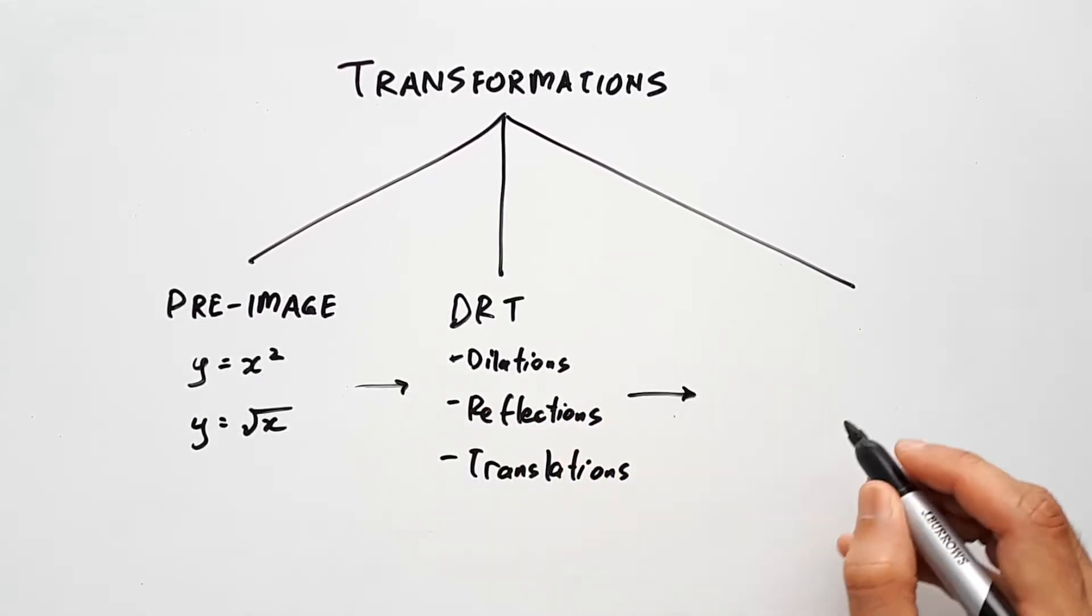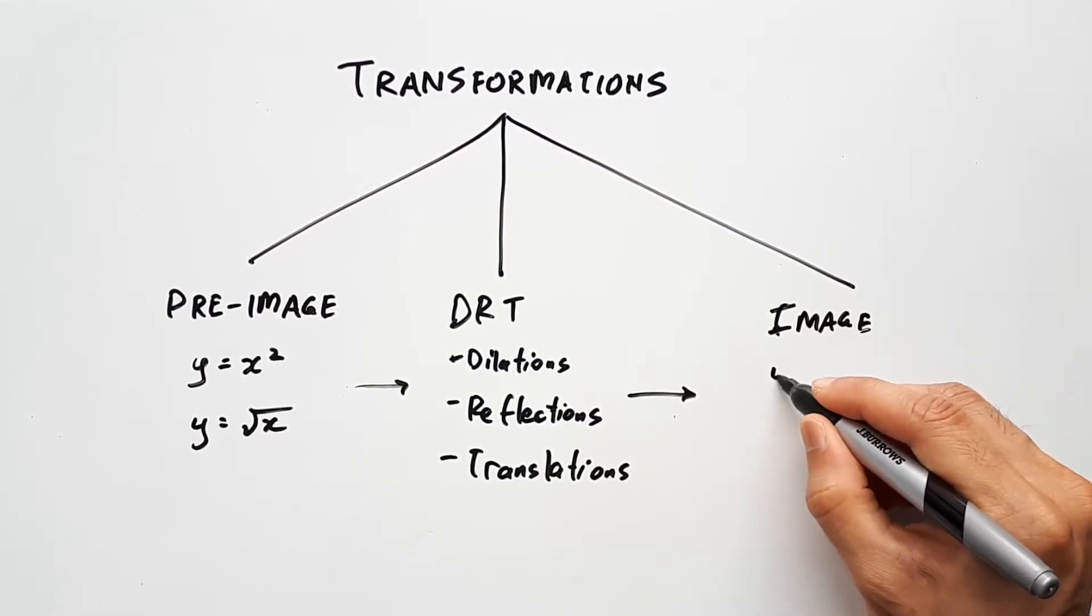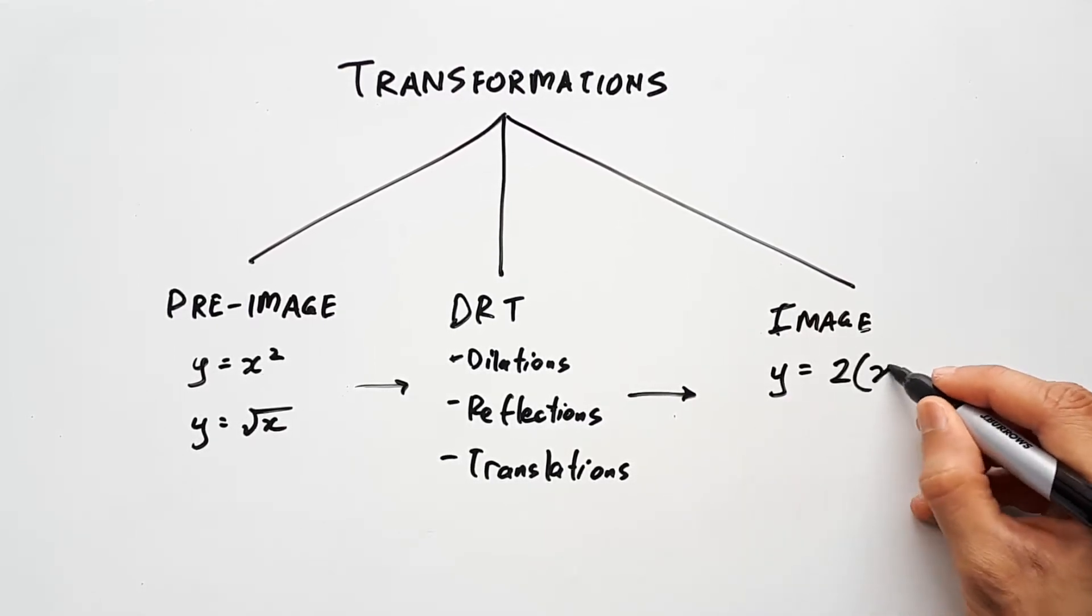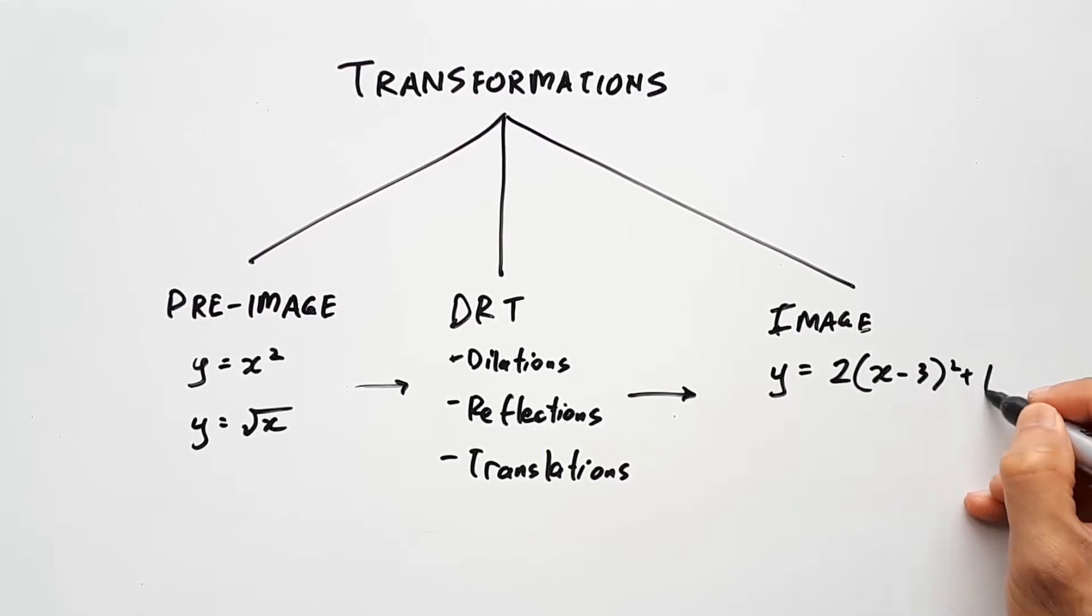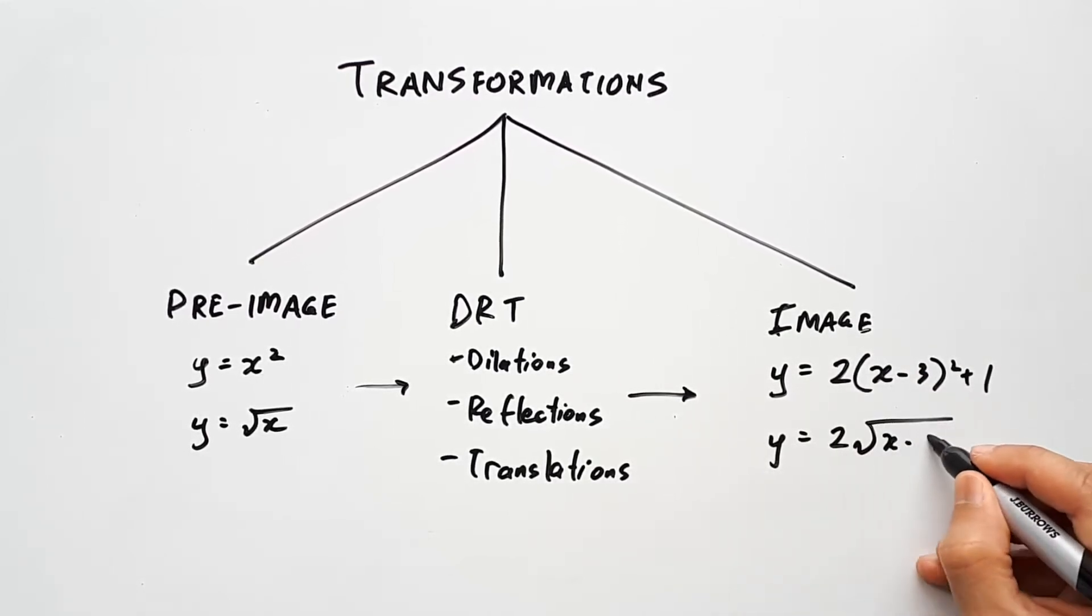When you feed the pre-image through these transformations, you will get a resultant equation known as the image equation, such as y equals 2 times (x minus 3) squared plus 1, or y equals 2 times the square root of (x minus 3) plus 1.